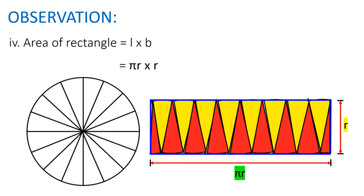As explained previously, length means πr and breadth means r. Finally, we get πr².